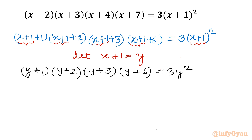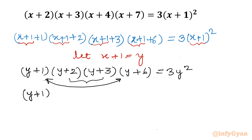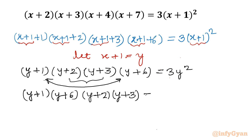Now let's club these brackets strategically: pair (y+1) with (y+6), and (y+2) with (y+3). So we have (y+1)(y+6) · (y+2)(y+3) = 3y². Now I will take the product of each pair of brackets.